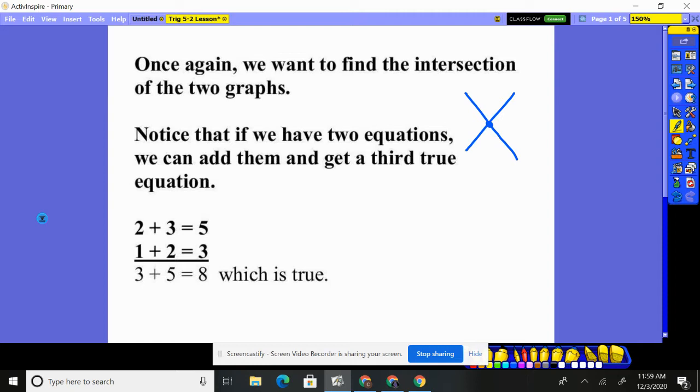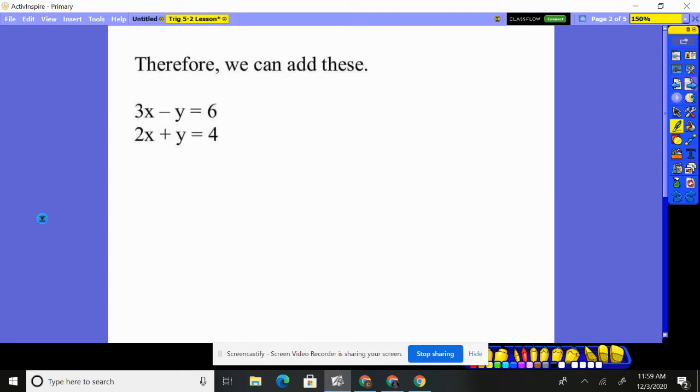Now, notice that if we have two equations, we can add them and get a third true equation. For example, 2 plus 3 is equal to 5, true. 1 plus 2 is equal to 3, true. If we add them, 2 and 1 gives us 3, 3 plus 2 gives me 5, and 5 and 3 gives me 8. Is this equation true? Yes! So we realize, hey, if you have two equations, you can add them and get a third equation, and it will be true.